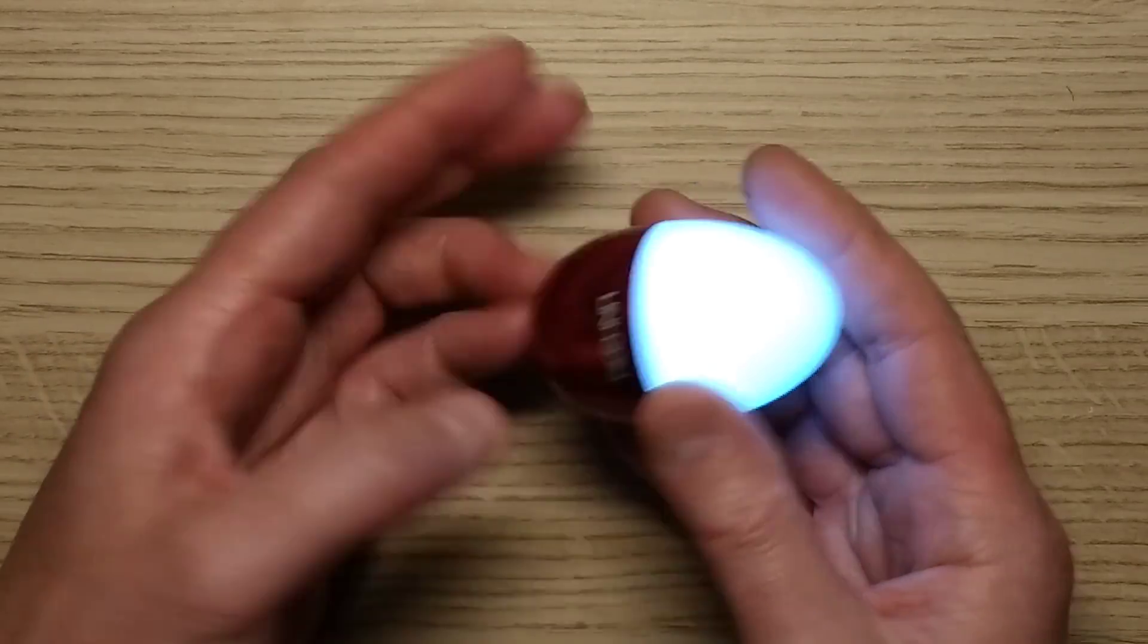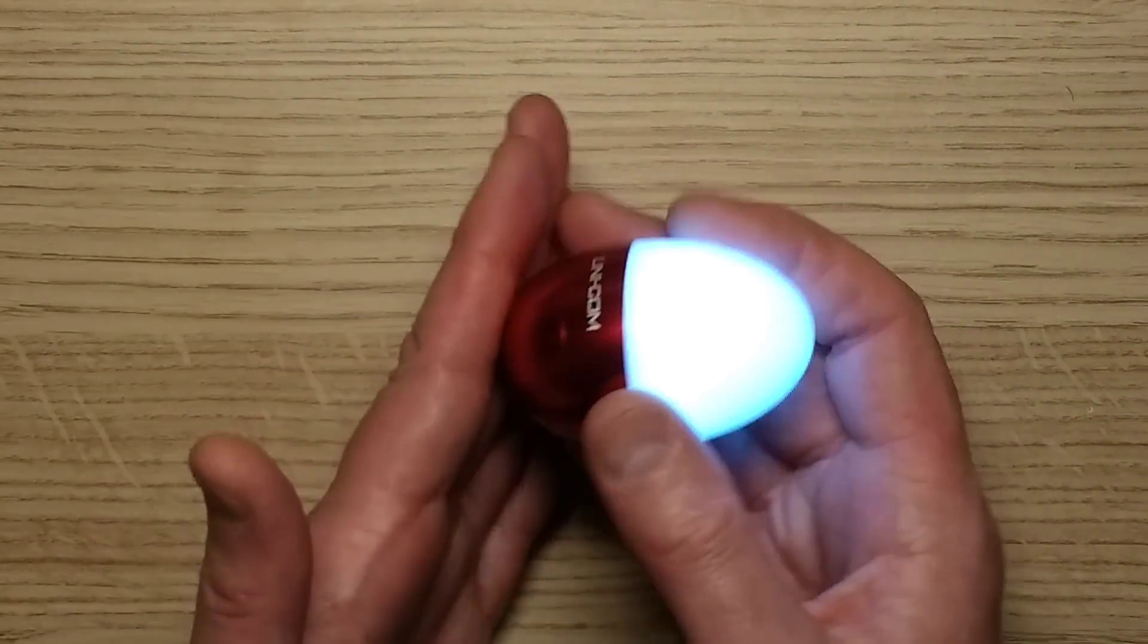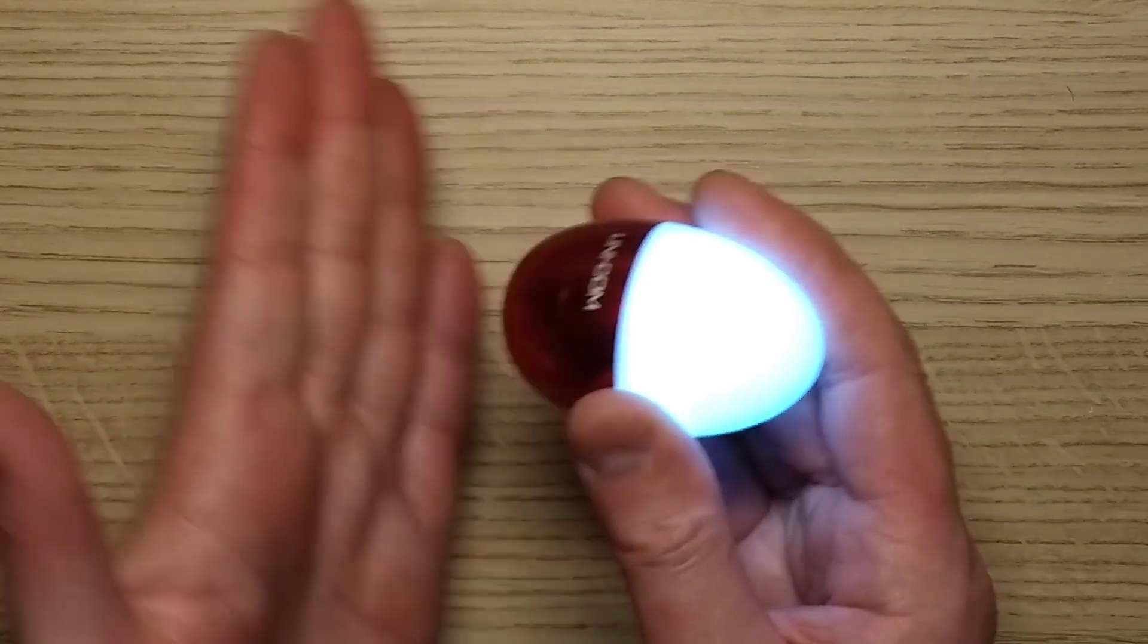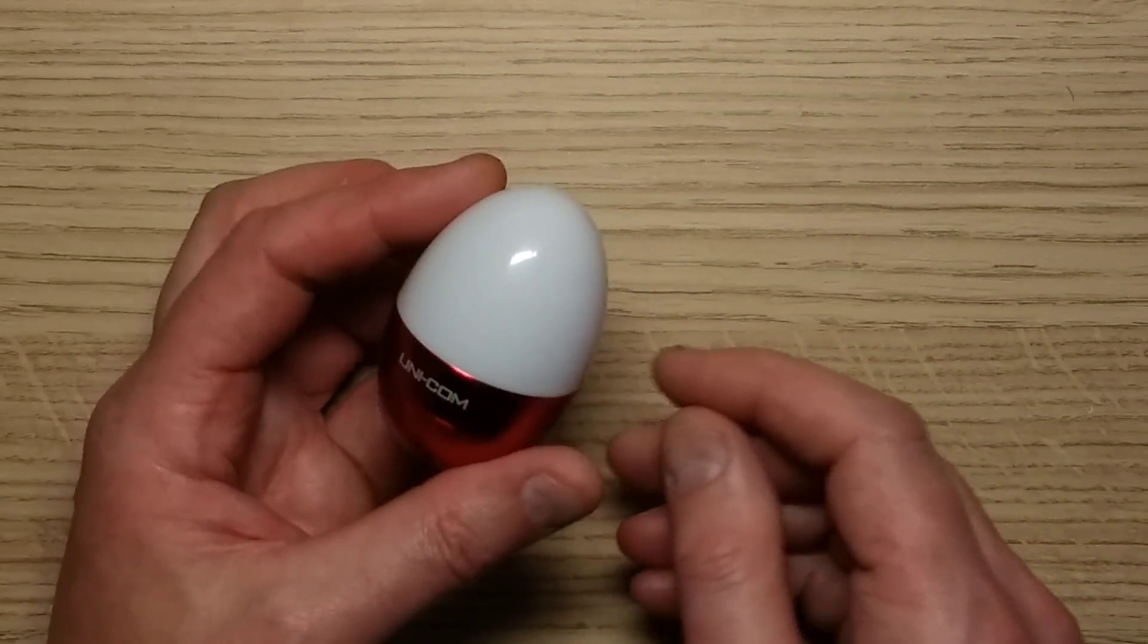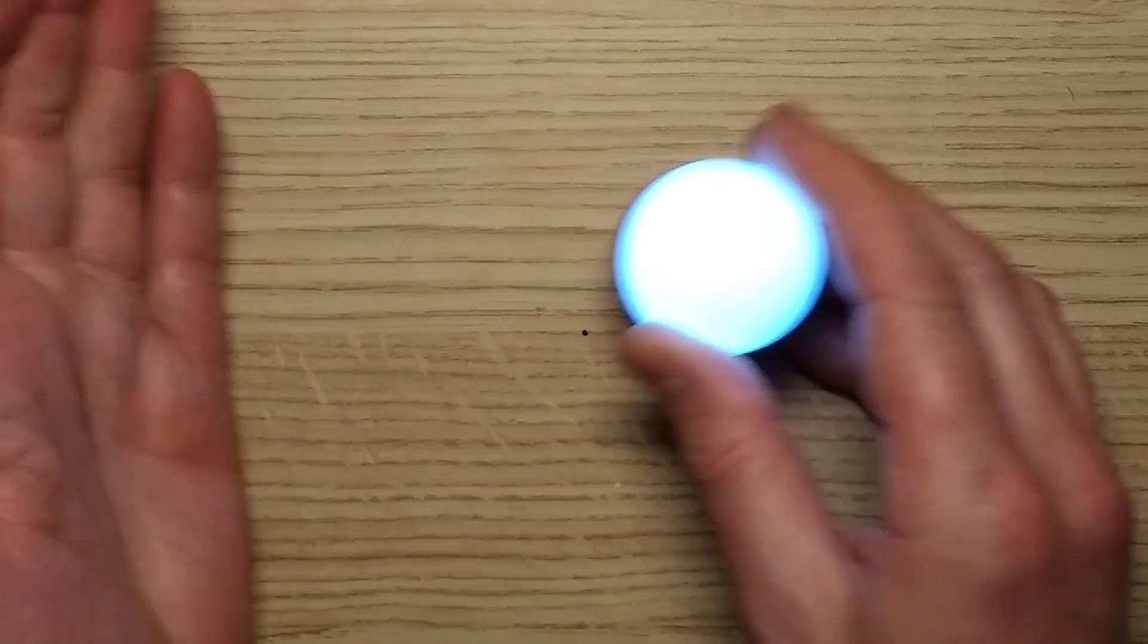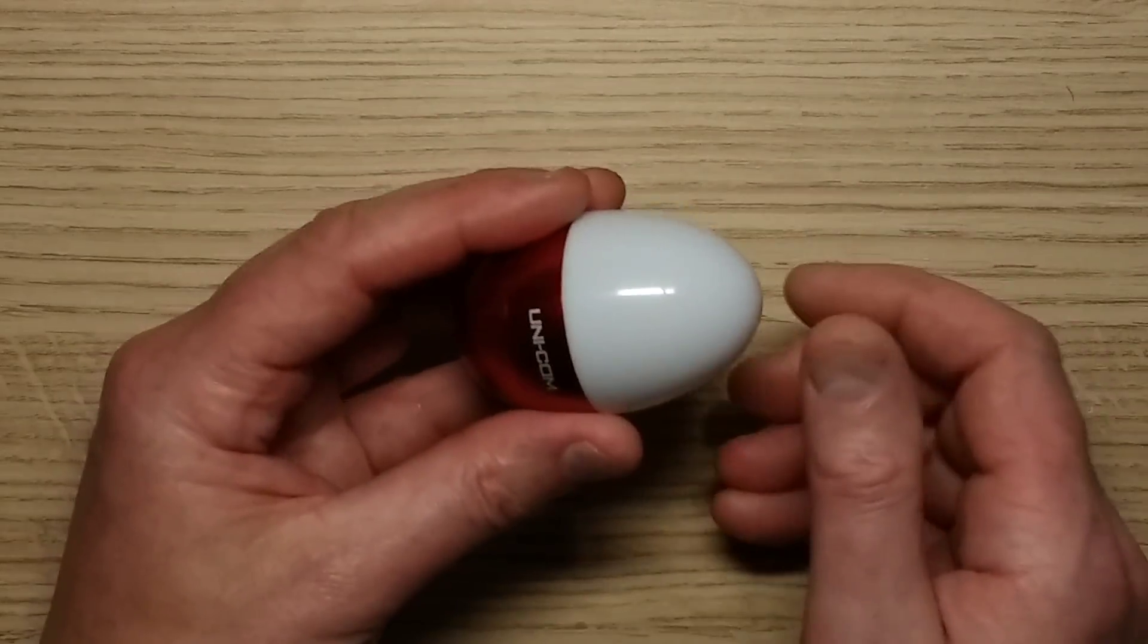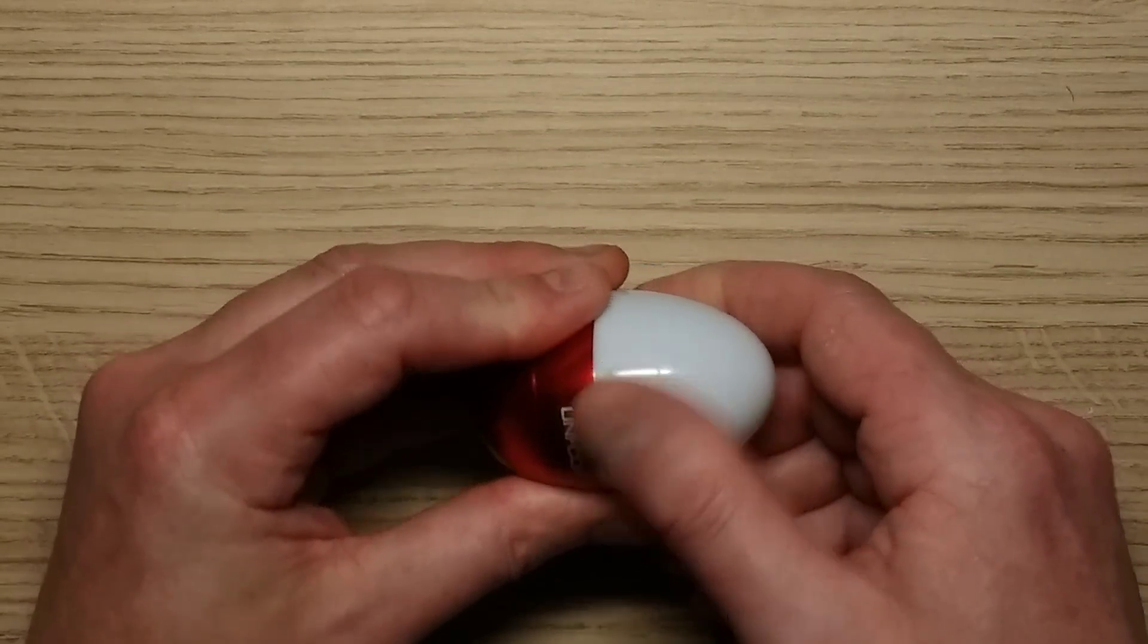So this is basically a self-balancing egg, it always comes up the right way. But if you smack it, it goes on and off. It's got a vibration switch in it. And it also has a timer so that if you just tap it and leave it on for a while, it will eventually go off. It takes a few minutes before it does that. So let's take a look inside.